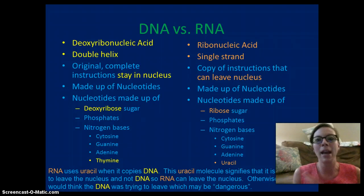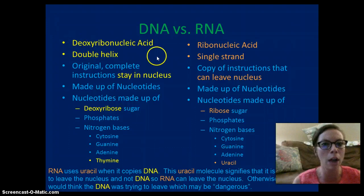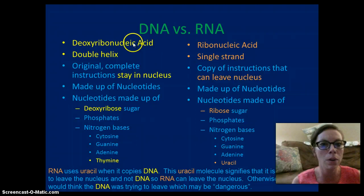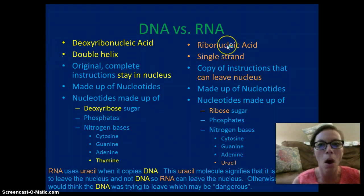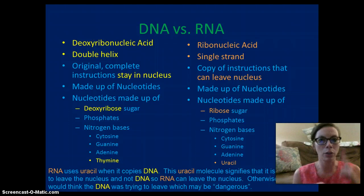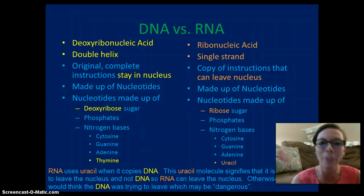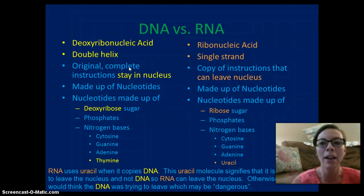First we're going to compare DNA and RNA. DNA is deoxyribonucleic acid and RNA is ribonucleic acid. The key difference in the names is the type of sugar — DNA has deoxyribose and RNA has ribose. DNA is a double strand, a double helix — two strands connected and twisted. RNA is a single strand. DNA contains the original complete instructions and stays inside the nucleus; it never leaves. RNA is a copy of those instructions that can leave the nucleus as mRNA.